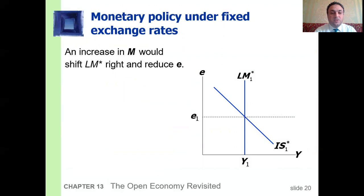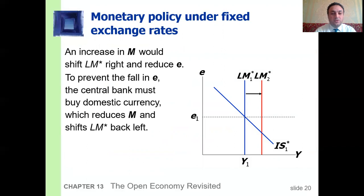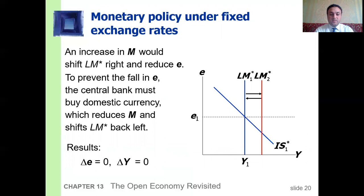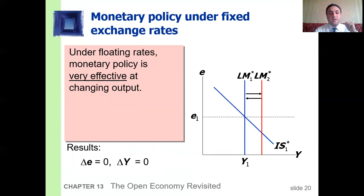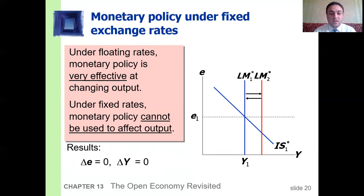Monetary policy under the fixed exchange rate: an increase in money supply would shift the LM curve to the right, which reduces the nominal exchange rate. To prevent the fall in the nominal exchange rate, the central bank must buy domestic currency, which reduces the money supply and shifts the LM curve back to the left. The result is no change in the nominal exchange rate and no change in output. So under fixed rates, monetary policy cannot be used to affect output.